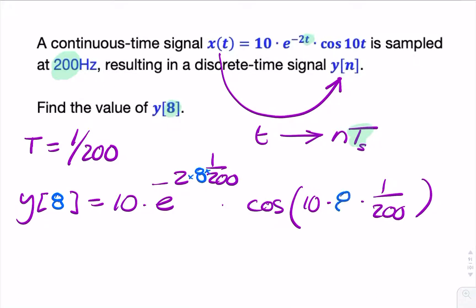If you put that in your calculator, you get 9.29. But make sure that your calculator is in radians. Because otherwise, the cosine term will be incorrect.